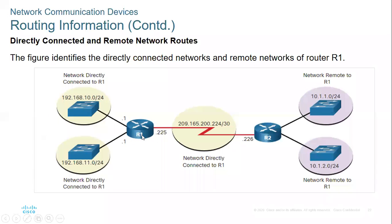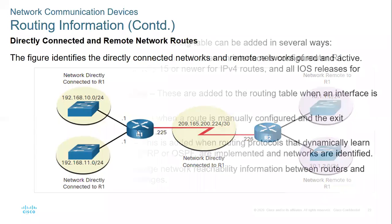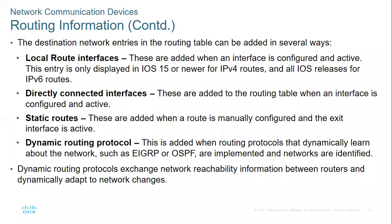With respect to router one, the directly attached routes are the ones connected to its own interfaces. The networks beyond those — belonging to other routers — are called remote routes with respect to router one.